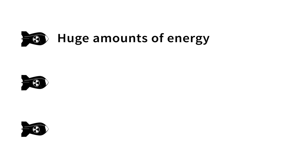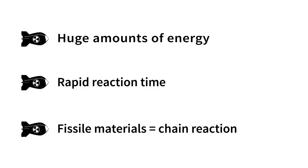These three factors make the atomic bomb possible. When you fission a nucleus, you get huge amounts of energy released. It is released very rapidly, and by using fissile elements, the process can keep self-perpetuating once it's started.